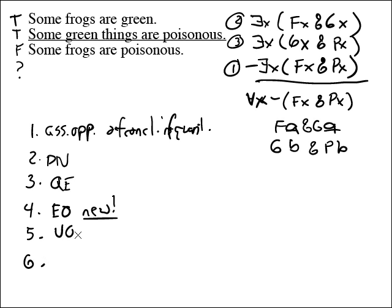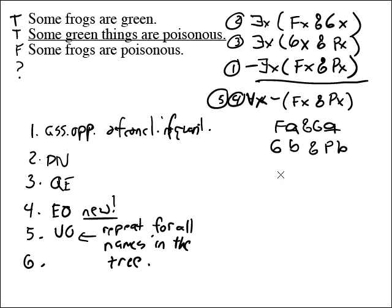No more existentials to work on. We have to do universal out. This is the place where the tree method varies a little bit from the proof method because for universal out on the tree method, we explicitly state that you have to repeat universal out, repeat for all names in the tree. How many names are in our tree at the moment? Two. A and b. Therefore, we have to do this step two times. So I'm going to call this step four and step five. And when I work on it, I'm going to first get dash fa ampersand pa, and then I'm going to do it again and get dash fb ampersand pb.